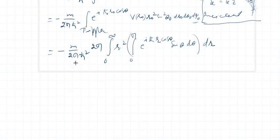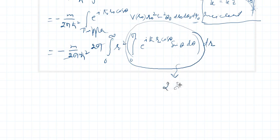minus m over 2 pi h cross square, and 2 pi, this 2 pi will cancel out with it. And as I know from previous lectures that its value is a standard value and it can be written as 2 sin kappa r over kappa r. If I put its value here,